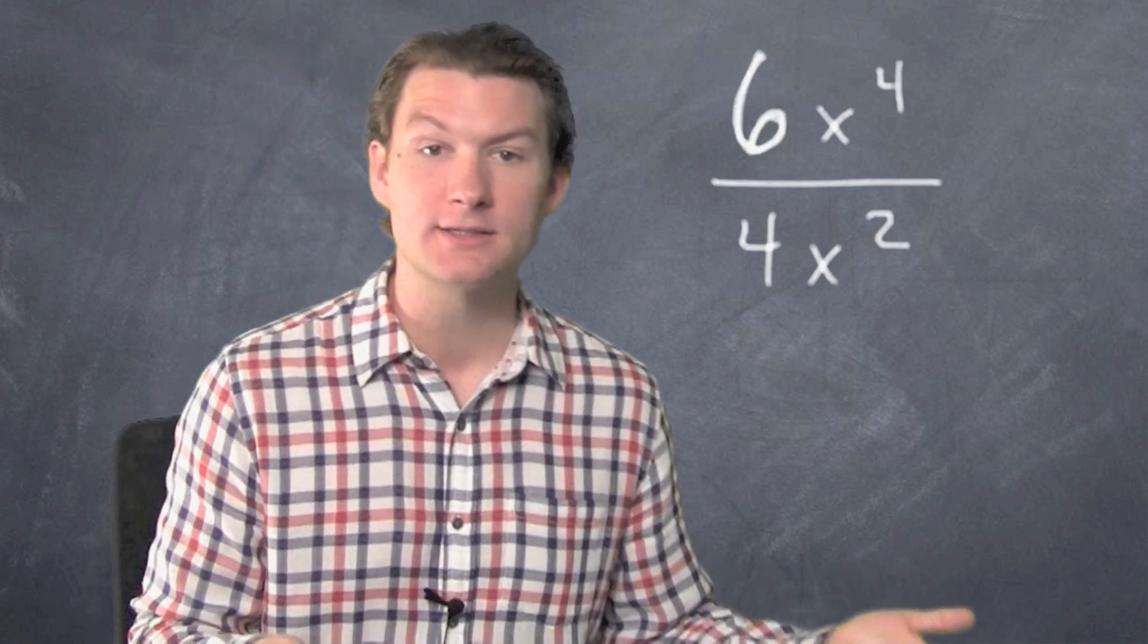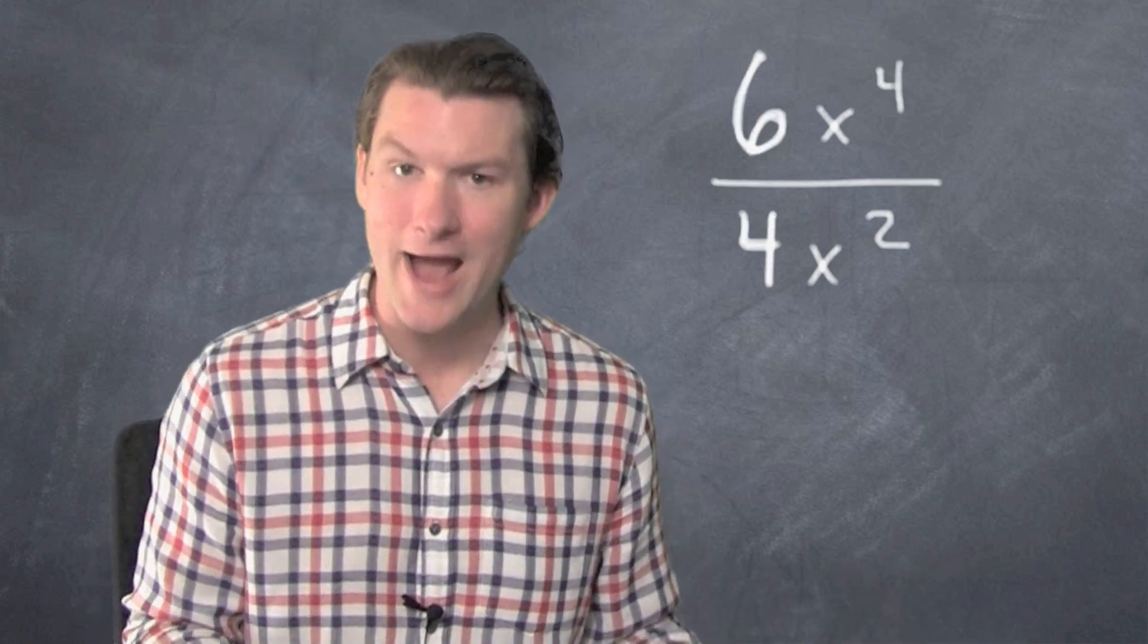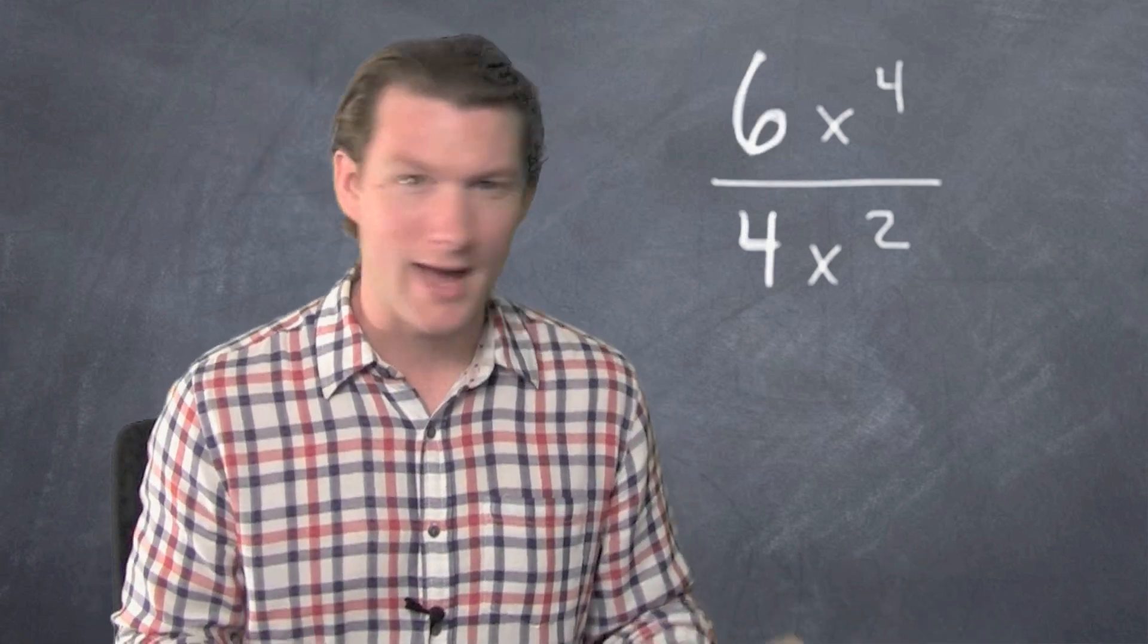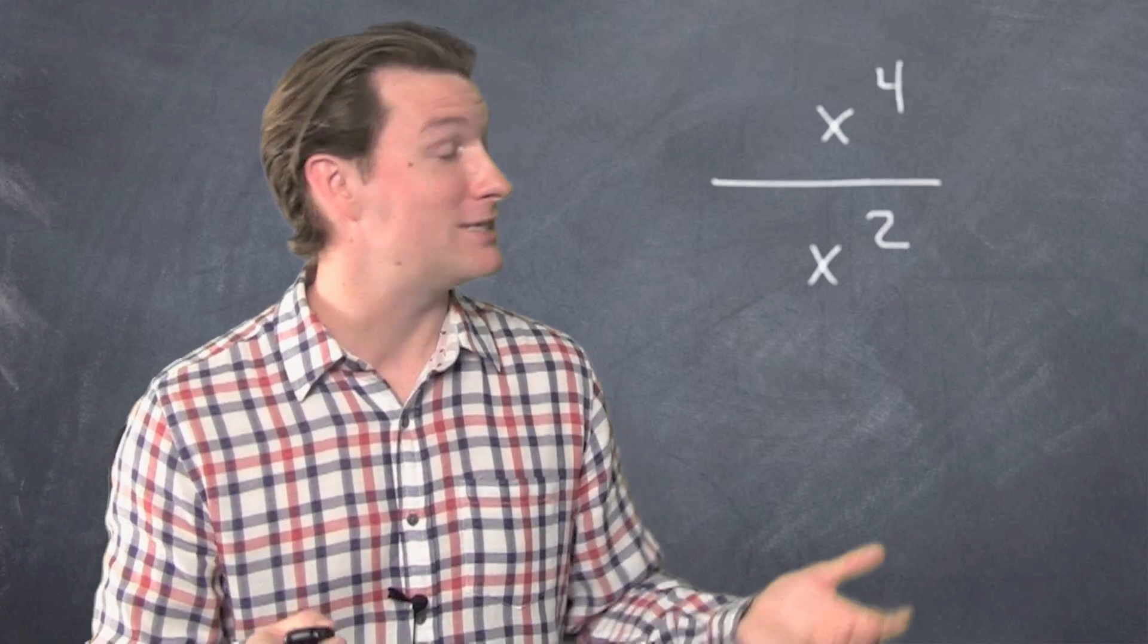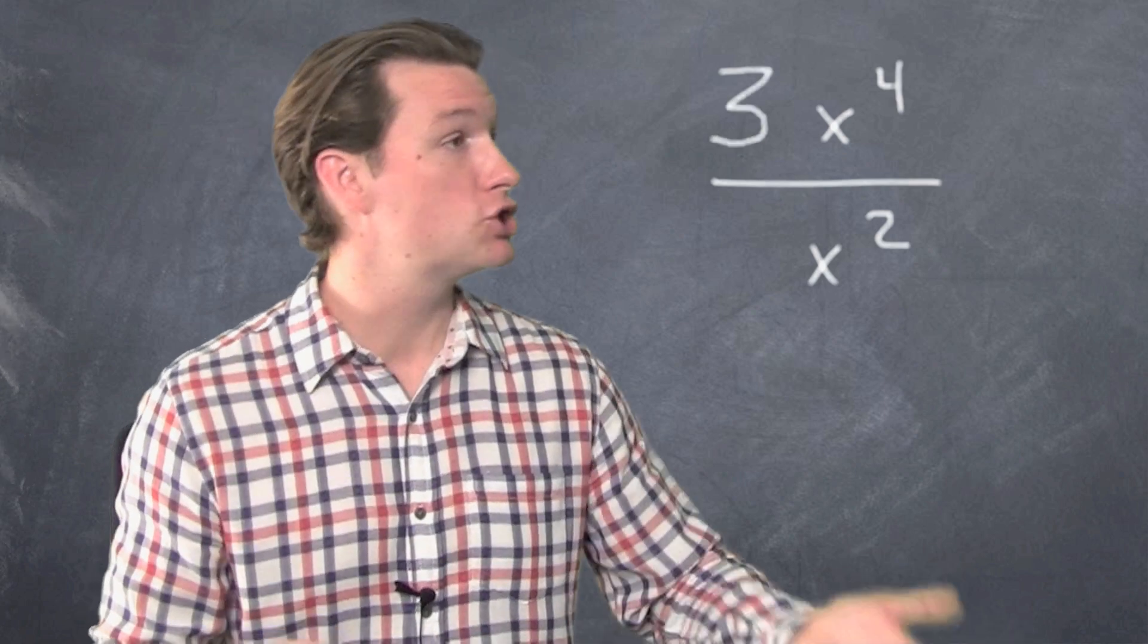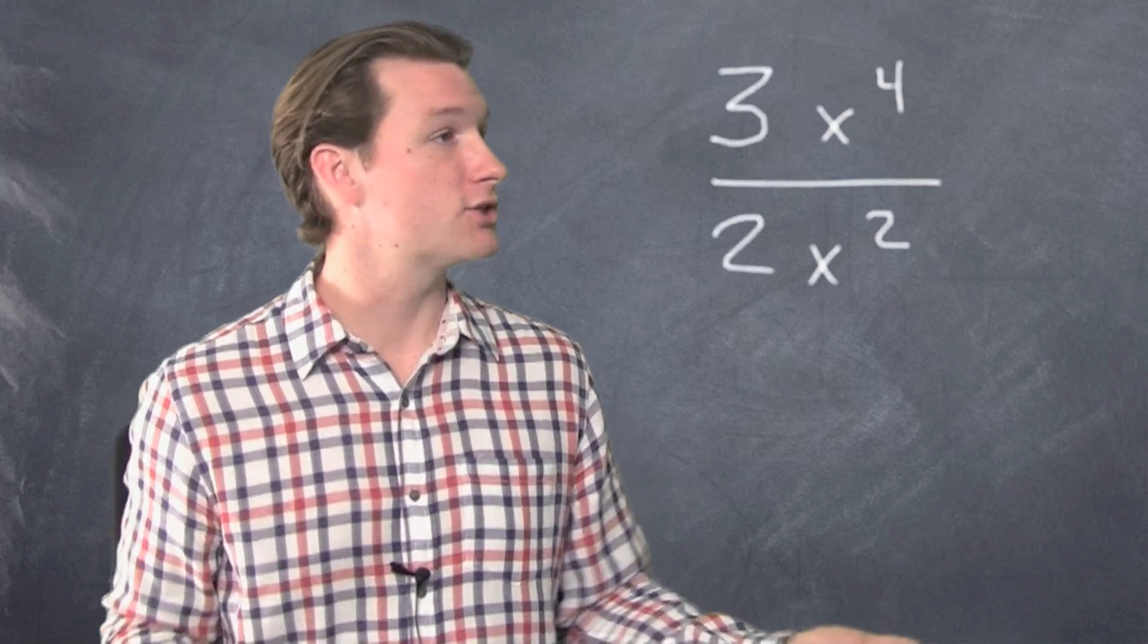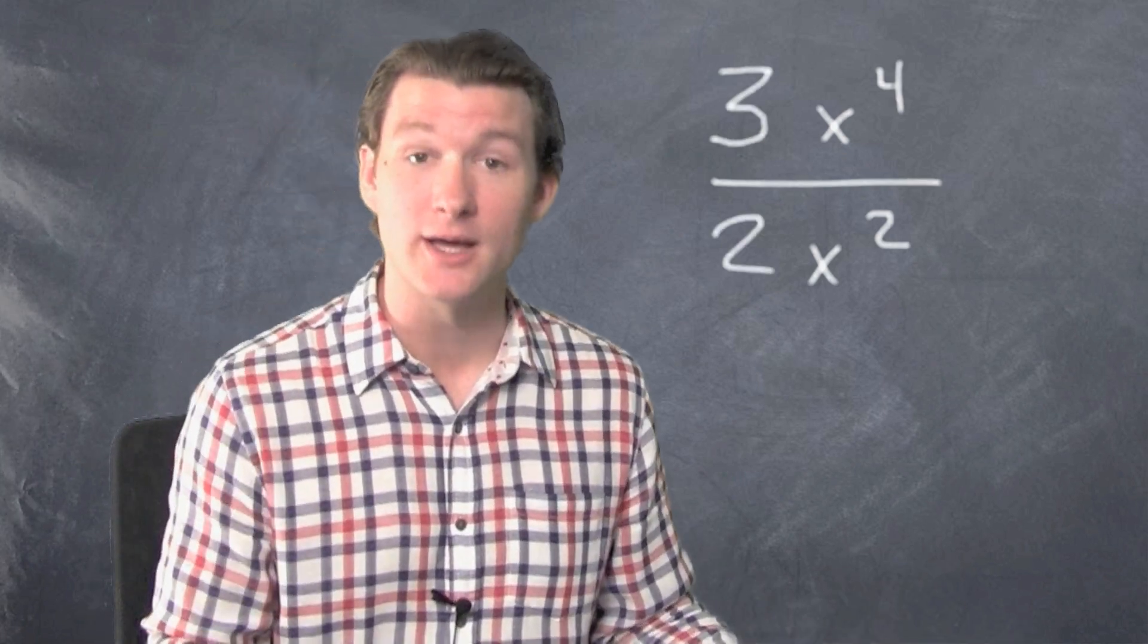The big numbers are 6 over 4, and that's a fraction that we want to simplify. How do we simplify 6 over 4? Well, they can both be divided by 2, so you'd have 3 over 2. Cool. That's our simplified fraction. Big numbers are done.